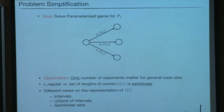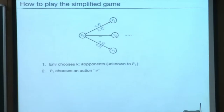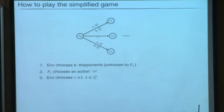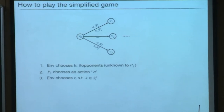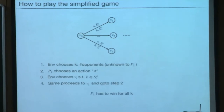Since the game has changed, let me quickly state the new formulation. The environment chooses the number of opponents; player 1 then chooses some action sigma; then the environment chooses the next vertex VI such that the number of opponents K belongs to the corresponding set. Opponents no longer have actions to play. The game proceeds to VI and so on, and player 1 wins if he wins for every K.